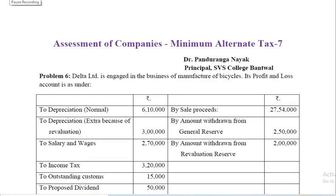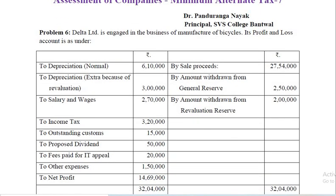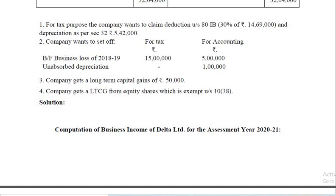Dear students, we are going to solve one more problem on the assessment of companies applying MAT — Minimum Alternate Tax. This is video number seven. I am Dr. Pondranganayak, principal. The name of the company is Delta Limited, engaged in the business of manufacture of bicycles. Its profit and loss account is given, followed by certain adjustments. Let us see the additional information one by one.